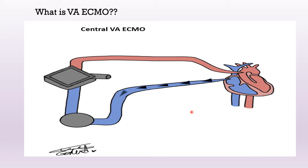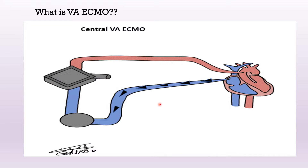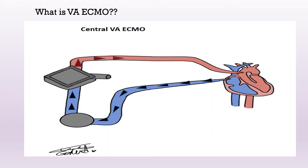The other type is central Veno-Arterial ECMO. The venous drainage is from the right atrium and the return cannula goes into the aortic arch. It is usually inserted after sternotomy, commonly after cardiopulmonary bypass, as it requires the sternum to be open.